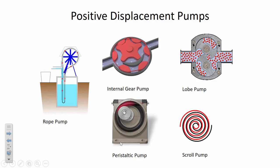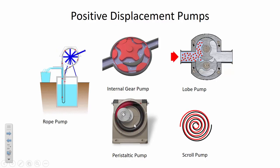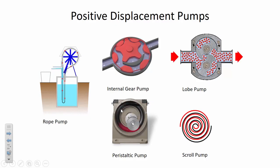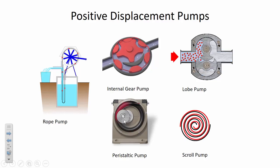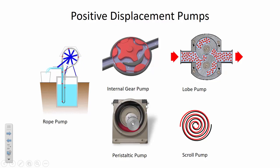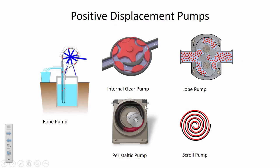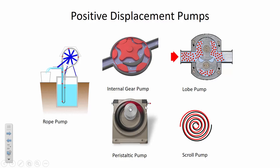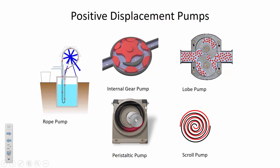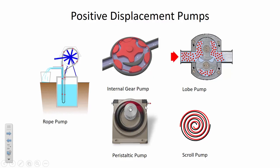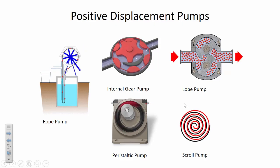Peristaltic pumps are common in environmental or water quality labs. A roller presses against plastic tubing at a certain speed, pinching it to deliver a precise volume of water — as little as milliliters per hour in a very controlled fashion. When you need to deliver a reagent at a very controlled and slow speed, peristaltic pumps work well for that. The more exotic pump types are uncommon in practice.